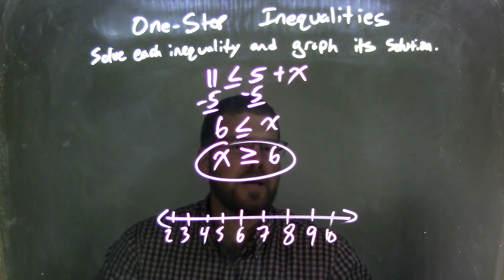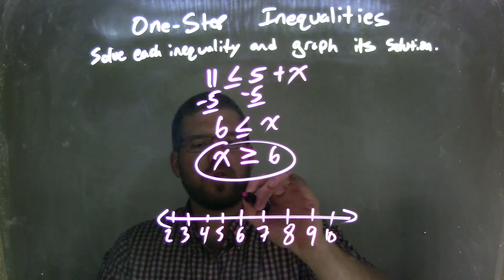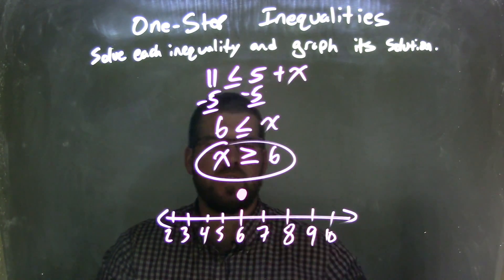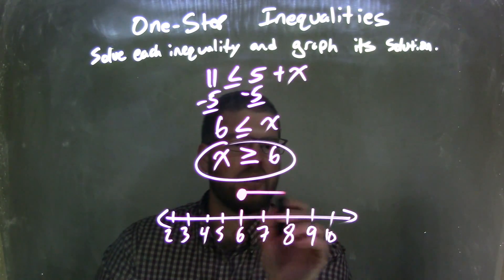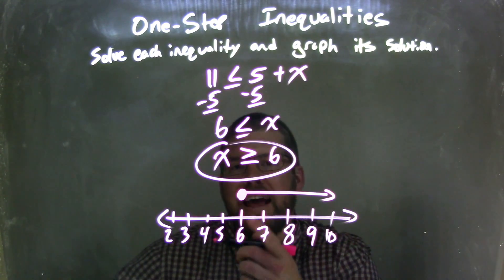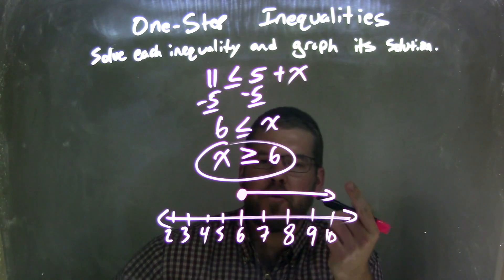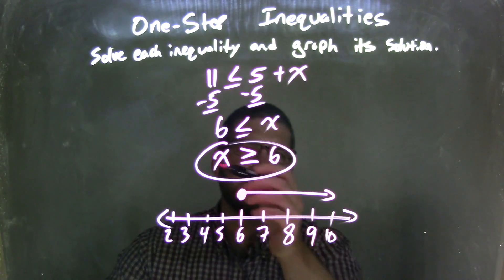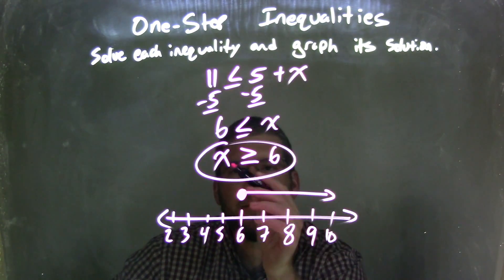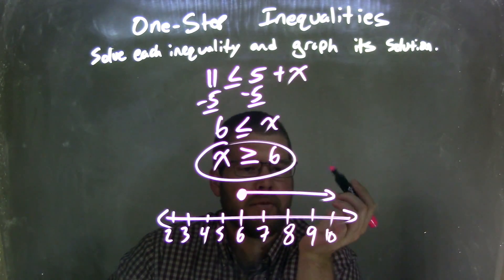So if x is greater than or equal to 6, I need a closed circle at 6 because it's going to equal 6. Then we said x is greater than 6, so my arrow is going to go to the right, showing that x can be any of these values that are greater than 6. Like 8, right? 8 fits. If I put 8 into this inequality, it makes it a true statement.